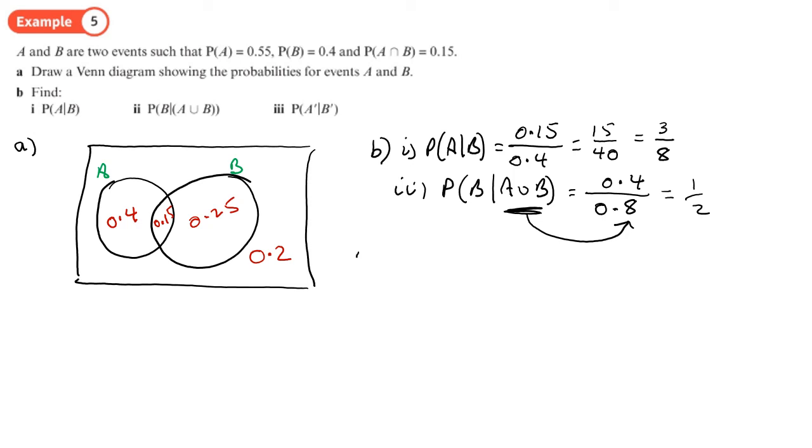And the last one. So the probability of not A given not B. So how much of this Venn diagram is not in B? So that's 0.6, the 0.2 and the 0.4. And how much of that stuff that's not in B is not in A?